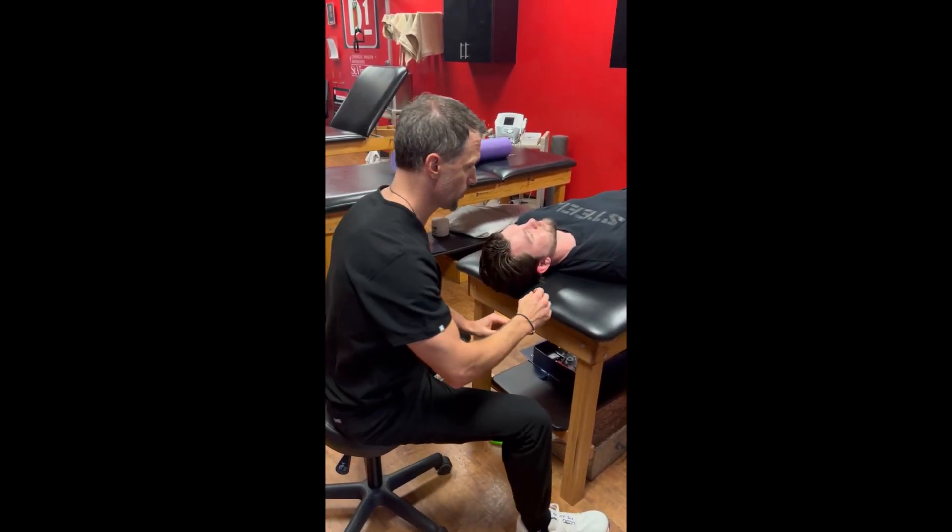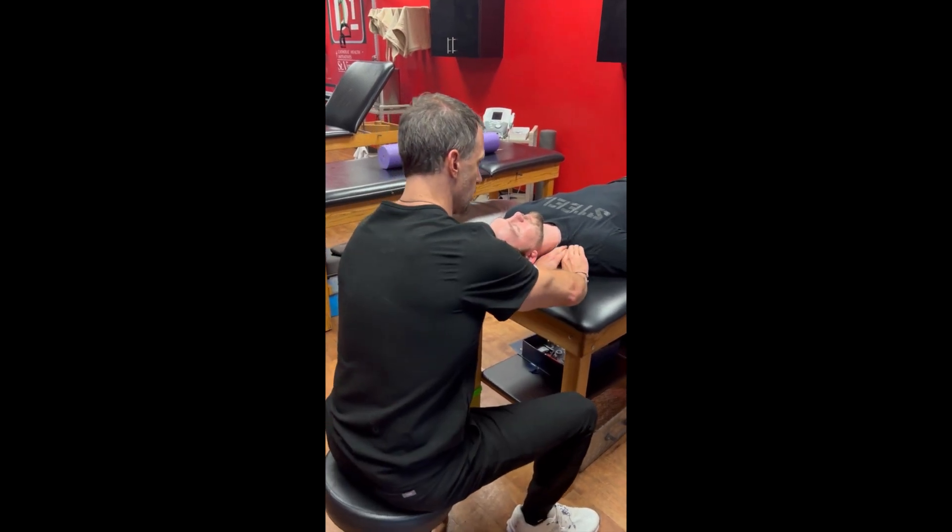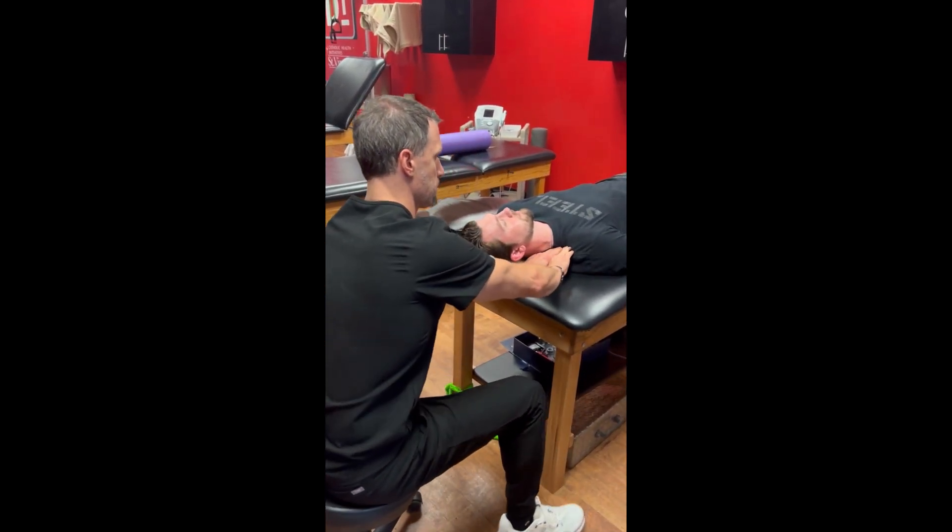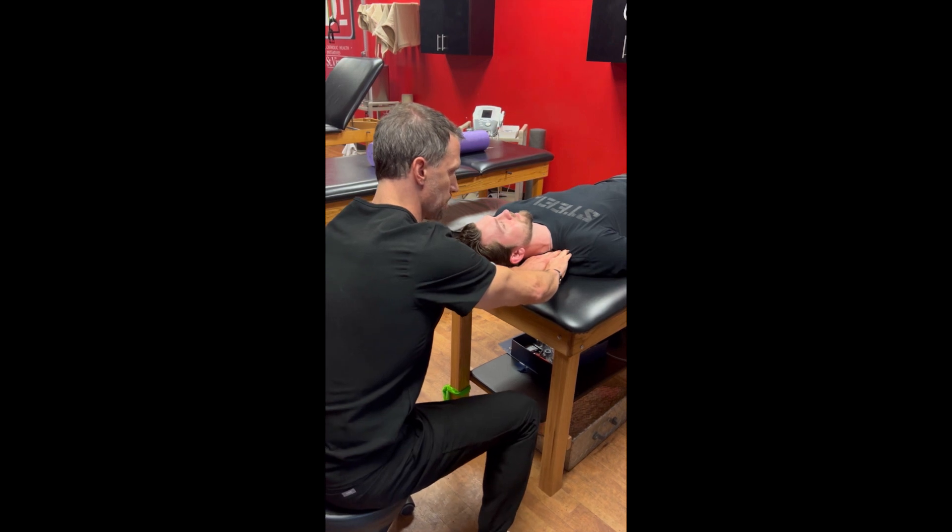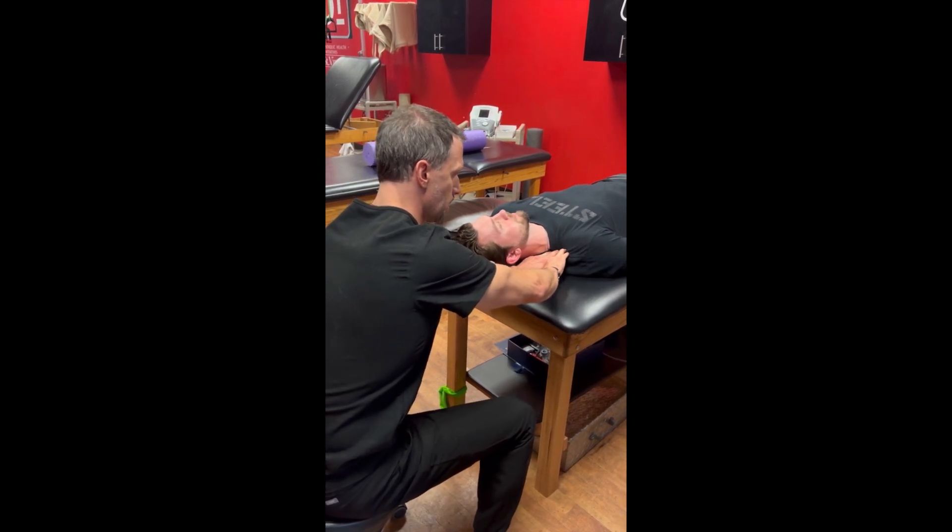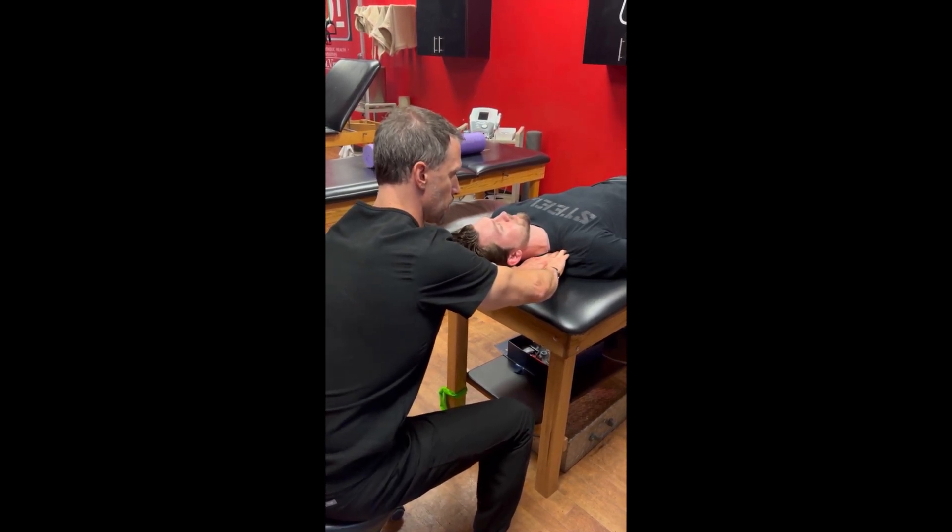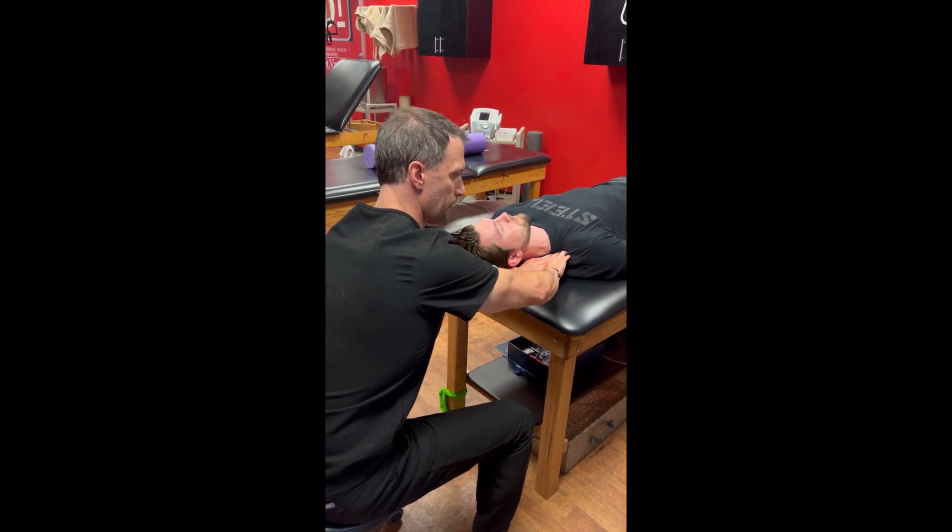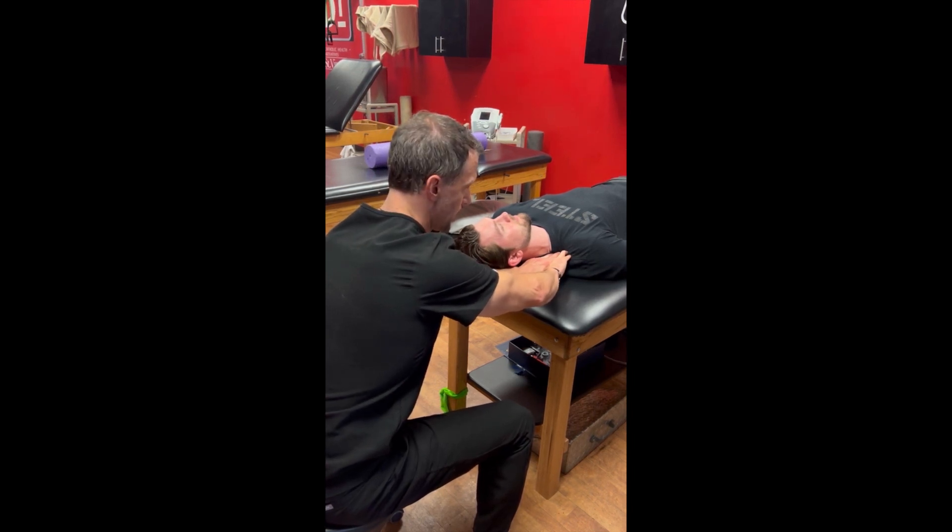If someone has costoclavicular compression, I would stretch the scalenes because if they're tight they could pull the first rib up and the second rib up. But I'd also add some first rib mobilization. I palpate the first rib here—it's not always real comfortable—but pushing into that and just freeing that up to decompress that area.